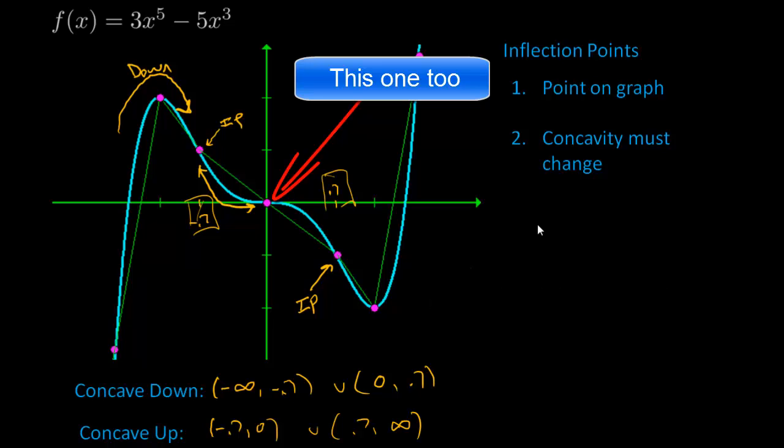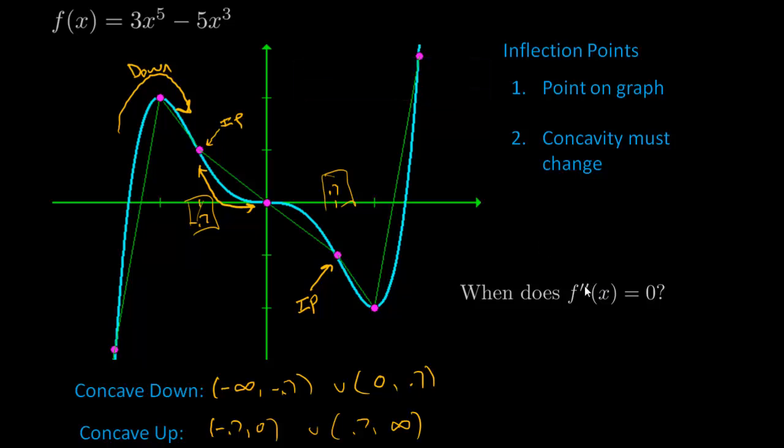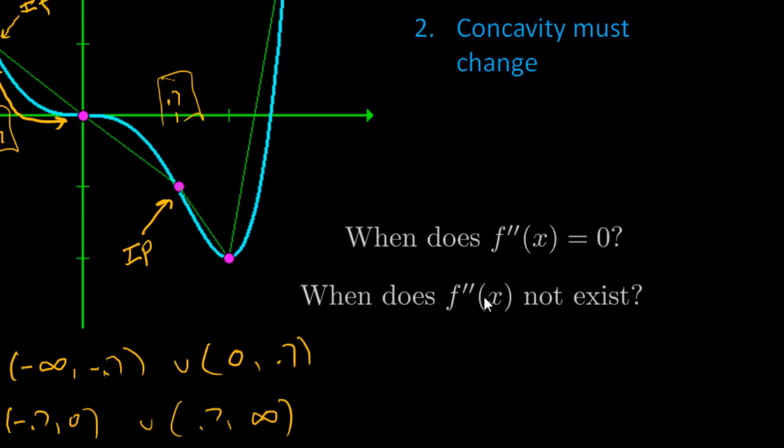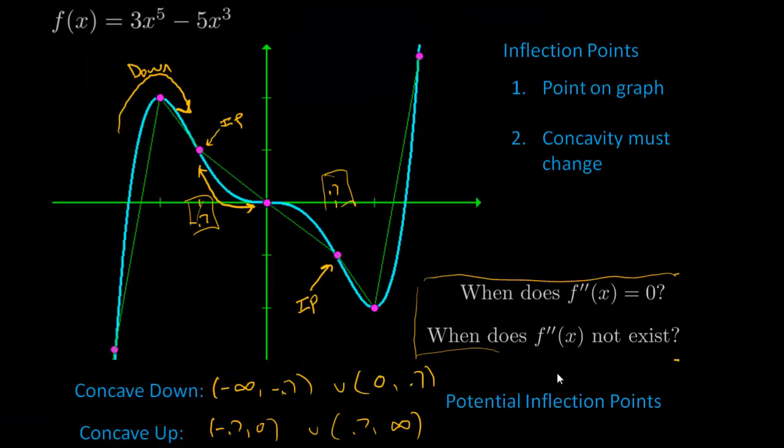So how do we find inflection points? They are pretty much like critical values to the second derivative. And how do we find critical values? We would set the second derivative equal to zero. We would set this or figure out when the second derivative does not exist. Now these would be potential inflection points. Like critical values on the first derivative, they were only potential local maxes and mins. We needed to do stuff to figure out whether they really were local maxes and mins. So in part two of the video, we will actually go through this problem again from start to finish on how to sketch it using the first derivative test and concavity.